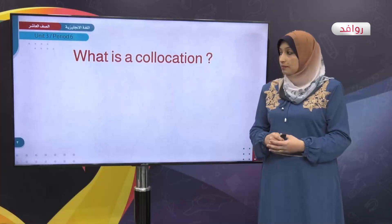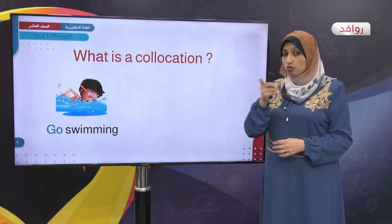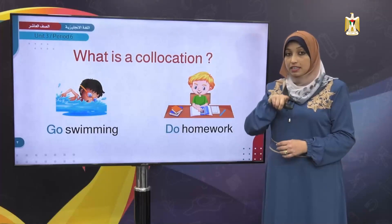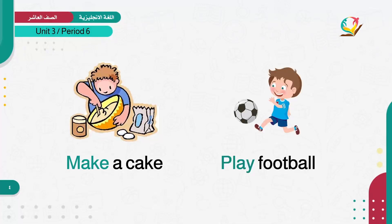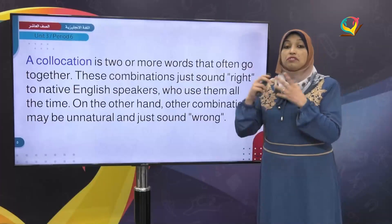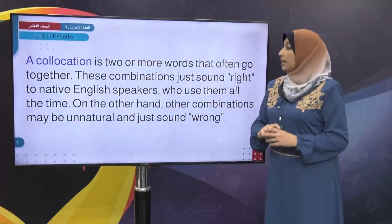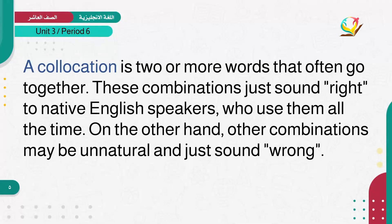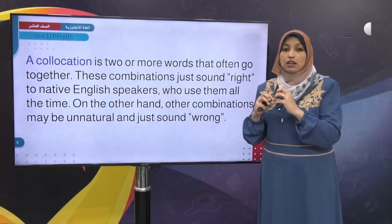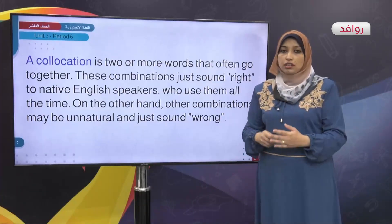What is a collocation? Look at this picture. Go swimming. Do homework. Make a cake. Play football. So all of these are collocations. A collocation is two or more words that often go together. These combinations just sound right to native English speakers who use them all the time. On the other hand, other combinations may be unnatural and just sound wrong.